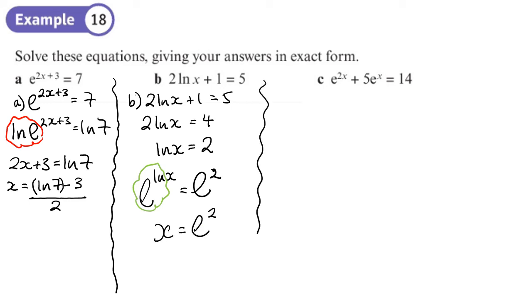And the third one here, we have e to the 2x plus 5e to the x equals 14. It's a quadratic if we look closely enough. And if we move the 14 across like this, and because it's a quadratic, you might say something like let y equal e to the x. So you have y squared plus 5y minus 14 equals 0. You might find that easier to factorize because from there